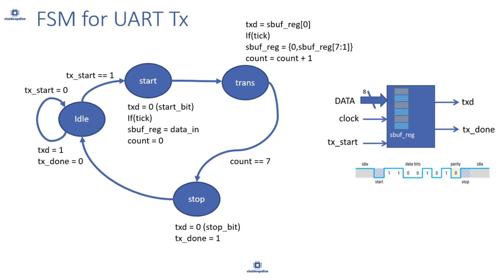In the transmit state, we keep sending each bit and incrementing the count on each tick, because we want to send data at the baud rate, not the system clock frequency. The baud rate generator produces a tick, and at each tick we send the next bit — bit 0, bit 1, bit 2, and so on. When count reaches 7, meaning all 8 bits have been sent, we move to the stop state.